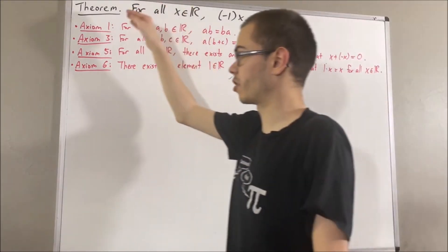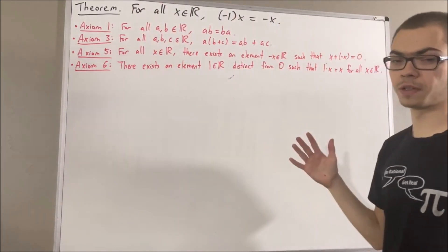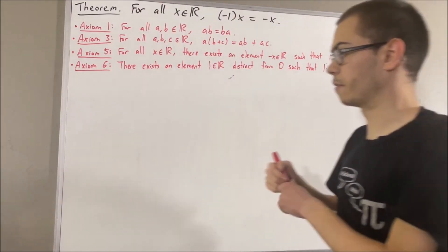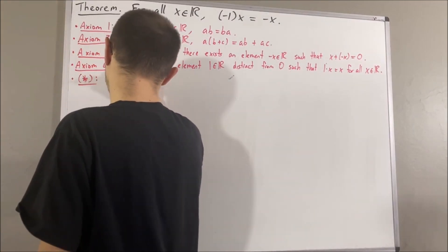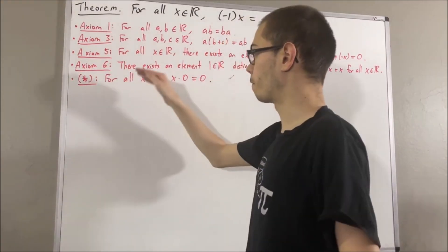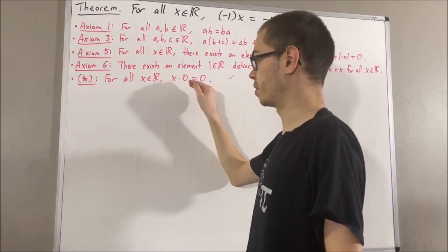Now in proving this theorem, we are also going to be using some properties that we've already proven. One of those properties is the following: We have proven for all real numbers x, x times 0 is equal to 0.